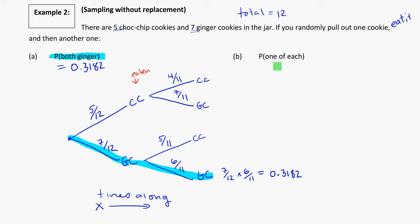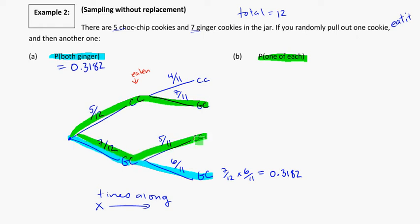Next: what's the probability that I get one of each cookie? There are a couple of ways I could do that — I could eat a chocolate chip and then a ginger cookie, or a ginger cookie first and then a chocolate chip cookie, so there's more than one possibility. I need to find the individual probabilities first. The probability of chocolate chip and then ginger cookie is five over twelve times seven over eleven, which equals 0.2652.